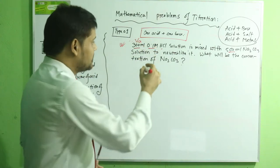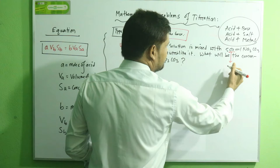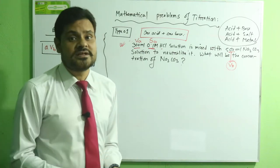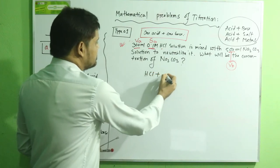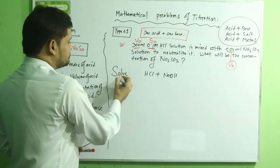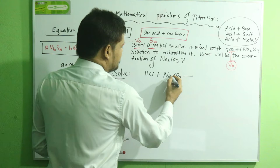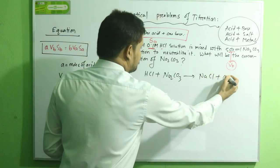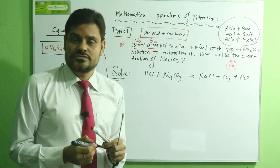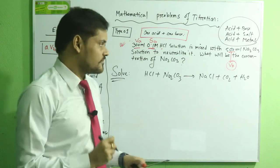In this problem, Va (volume of acid) is given, Sa (concentration of acid) is given, and Vb (volume of sodium carbonate, acting as base) is also given. Our duty is to write the related reaction between acid and base. The reaction is: HCl + Na₂CO₃ → NaCl + CO₂ + H₂O. You must balance this equation first before applying the volumetric equation to solve the problem.